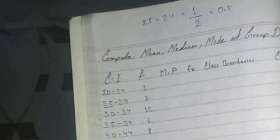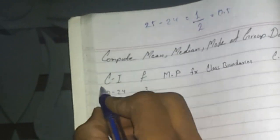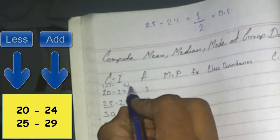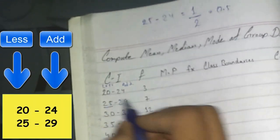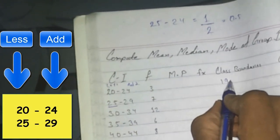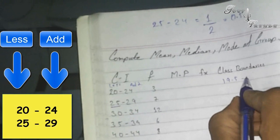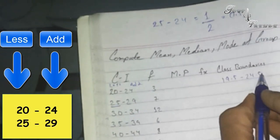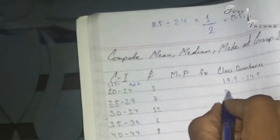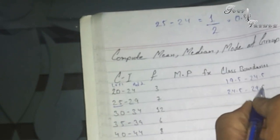Now let's do it the easiest way. Just subtract 0.5 from the lower limit and add 0.5 to the upper limit. So 20 becomes 19.5, and 24 becomes 24.5. Then 24.5 becomes the next lower boundary, and 29 becomes 29.5.